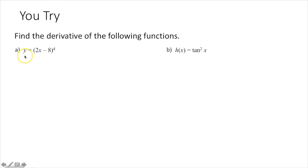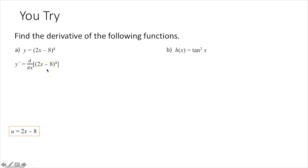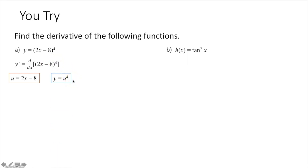We're doing the same thing here. When taking the derivative of a composite function, first find what is our innermost function. We're going to set u equal to our innermost function, which is 2x minus 8. That means our outermost function is going to be u to the fourth power. So when I take the derivative using the chain rule, I take the derivative of my outermost function: this would be 4u to the third, or 4 times the quantity 2x minus 8 to the third.